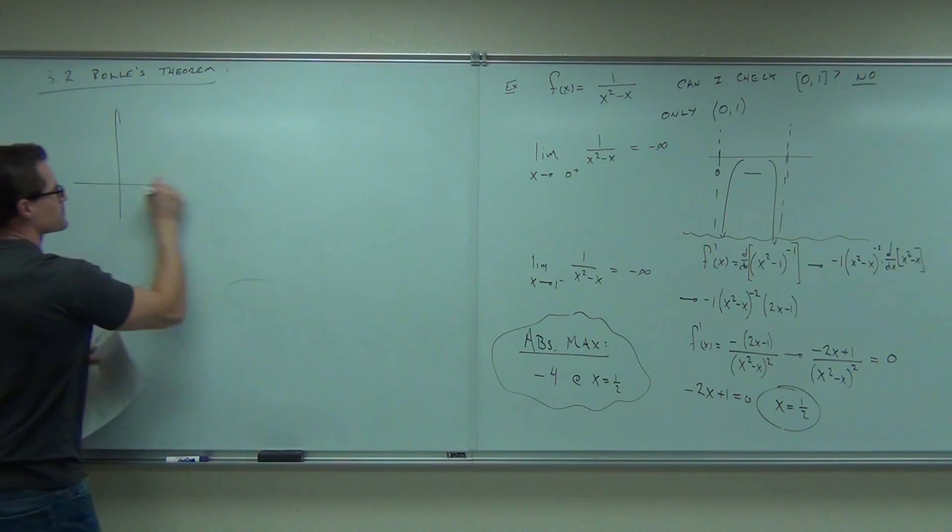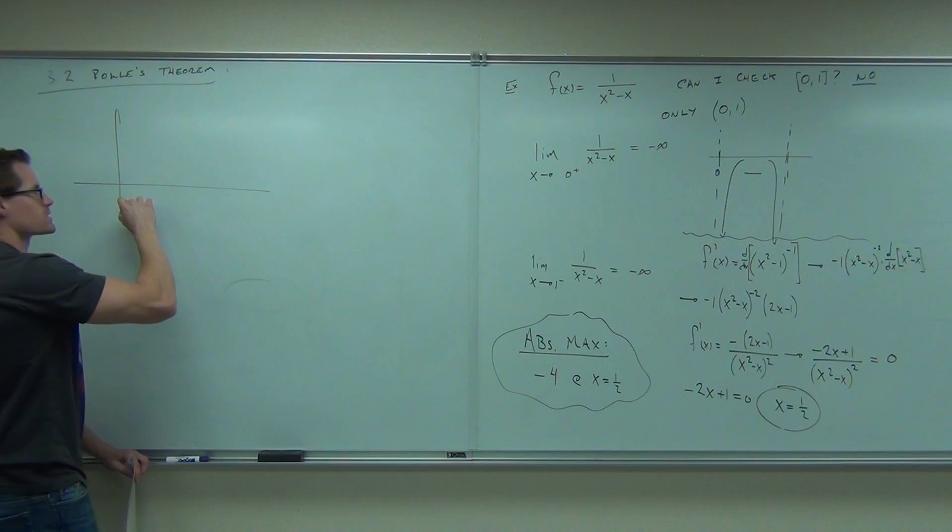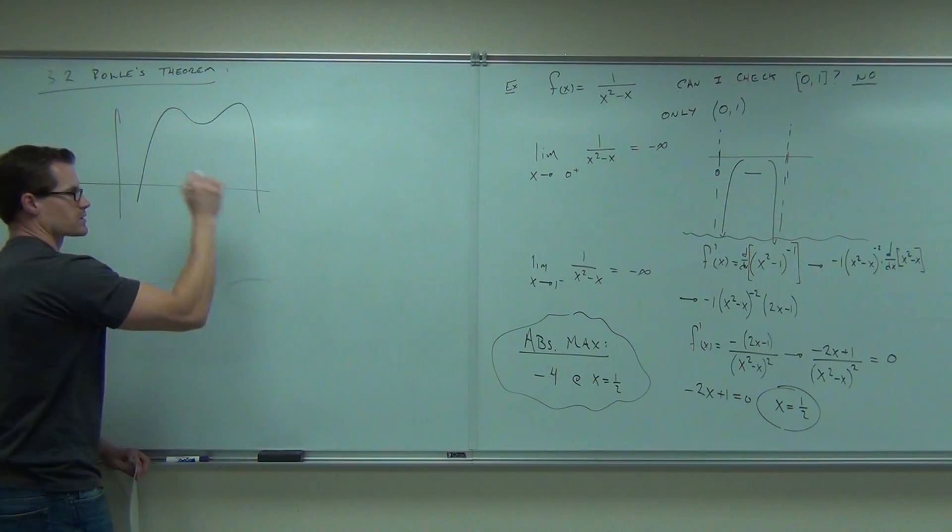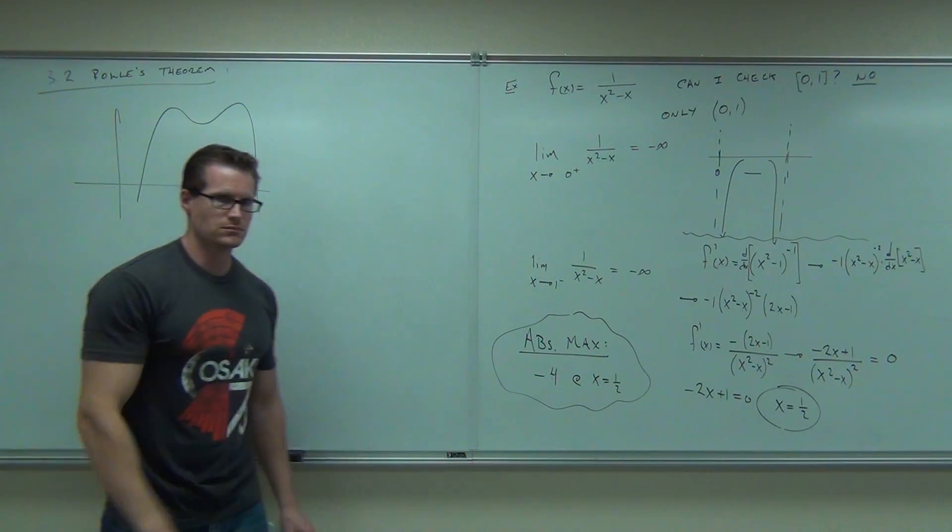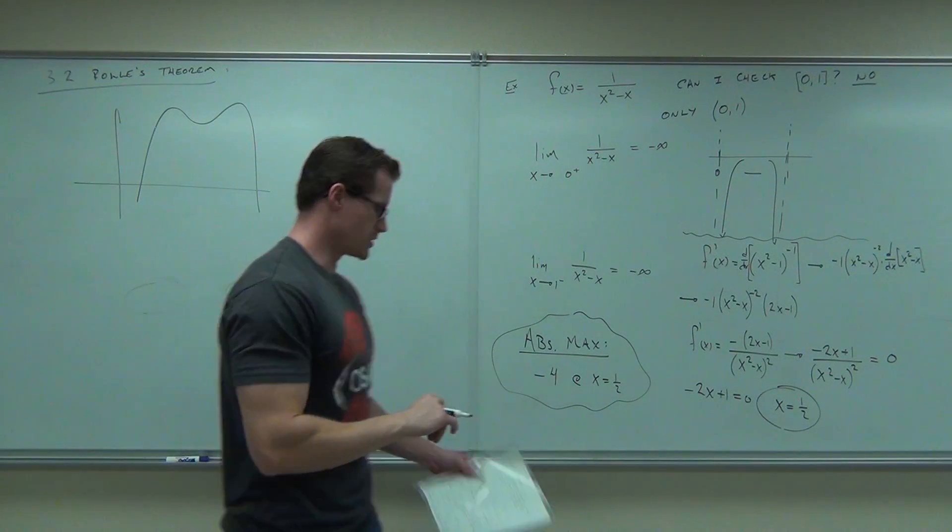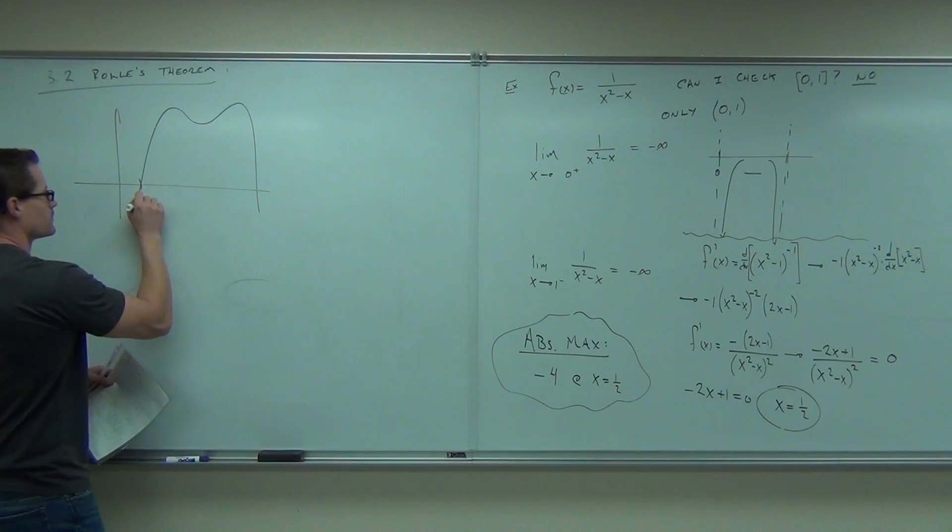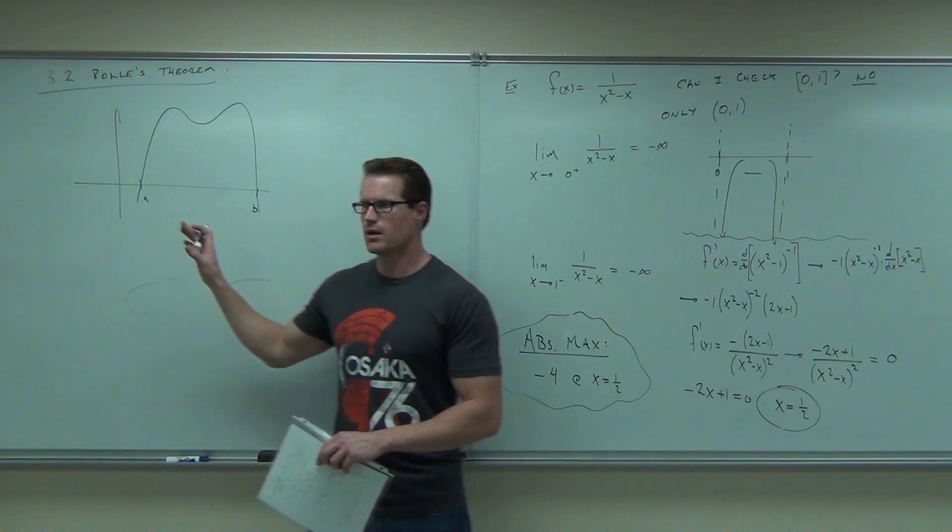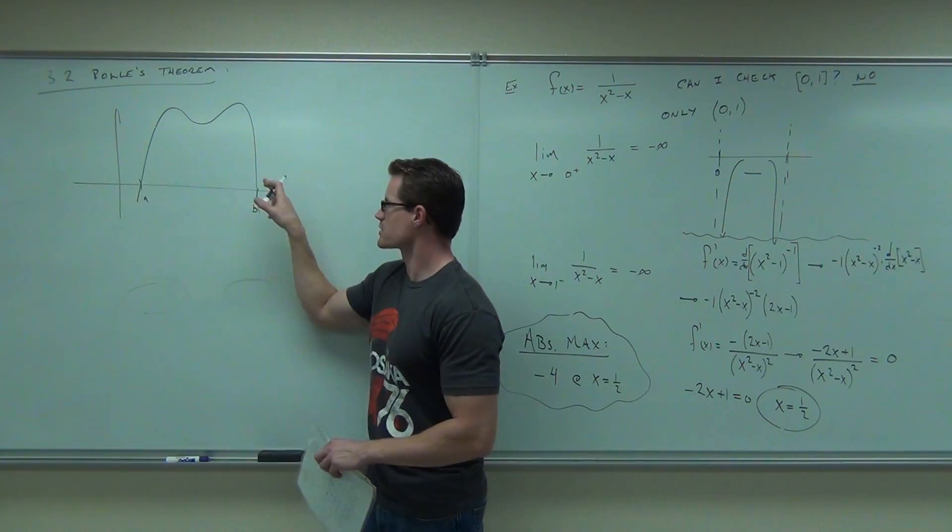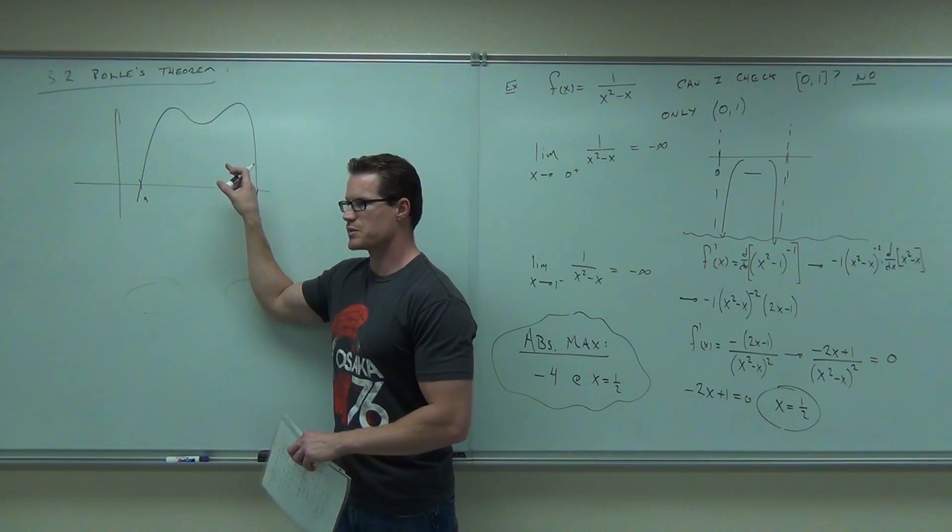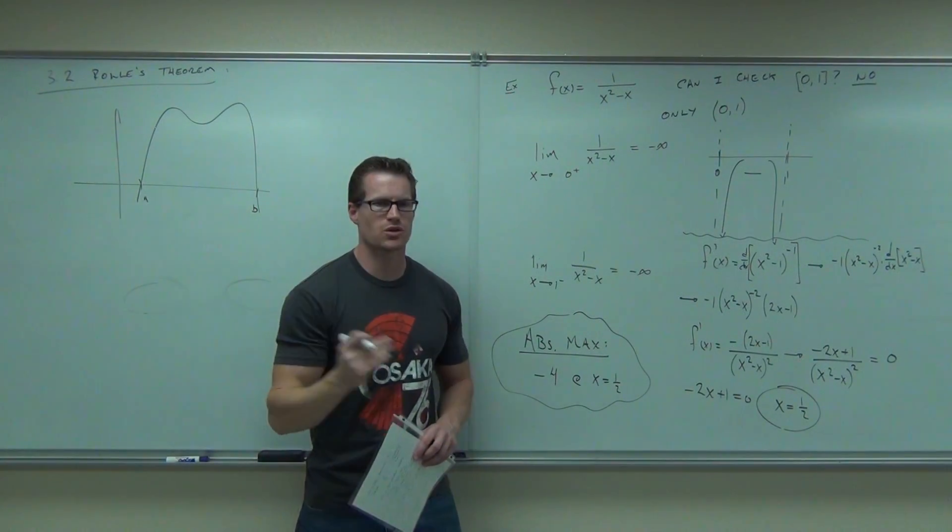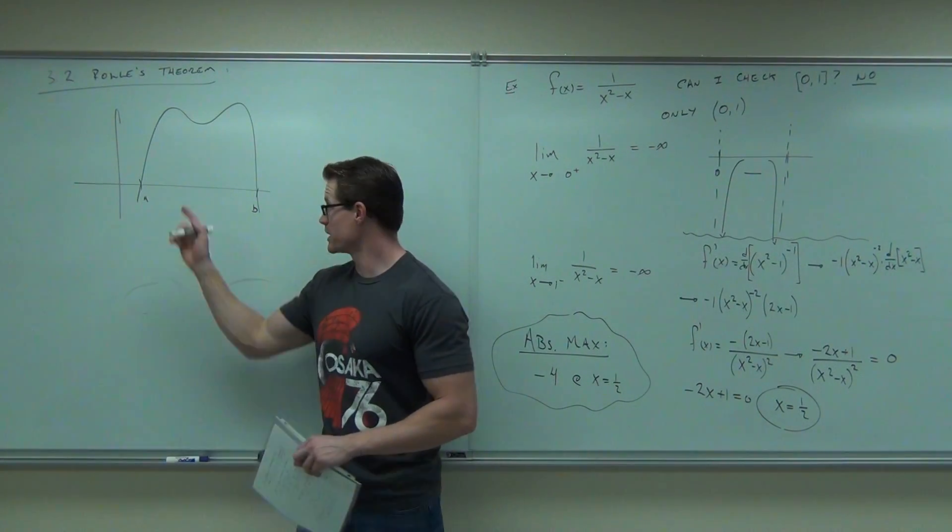Rolle's Theorem says, if your function crosses the x-axis and then crosses the x-axis again, so like that, and it's continuous between those points, so it could do anything, but if it crosses here, and it crosses here, and you know it's continuous between them, tell me something that absolutely has to be certain about your slope between these two points.